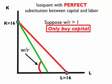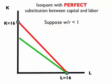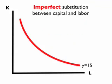If the wage-rental ratio was slightly less than 1 — slightly less than the slope of the isoquant — the firm would go in a completely opposite direction. In that case, labor is cheaper, and it will only choose labor and no units of capital. Again, a razor's edge.